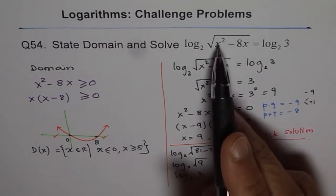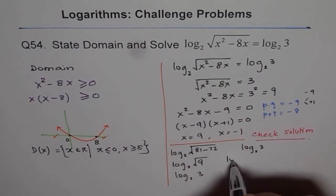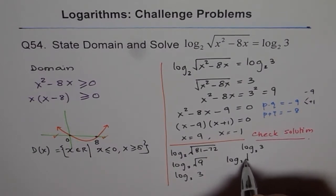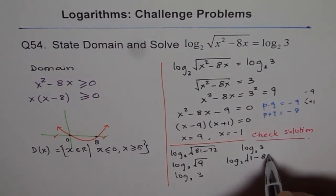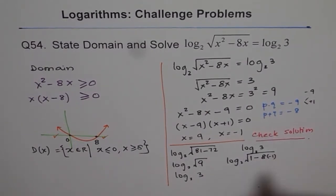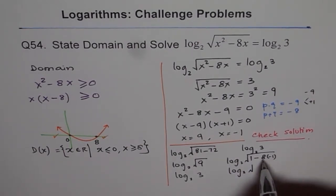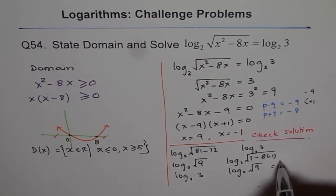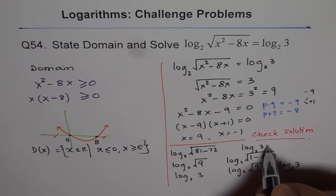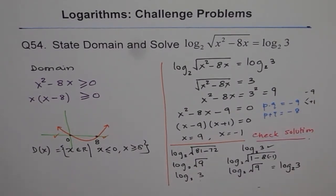So, if I plug in minus 1 here, then what do I get? I get log 2 of square root of minus 1 squared is 1 minus 8 times minus 1. Let me write 8 times minus 1 first, right? So, that gives me log 2 of square root of, that becomes plus 9. RHS, RHS log 2 of 3, so that is also perfectly fine.